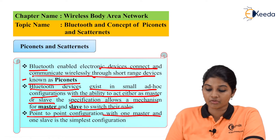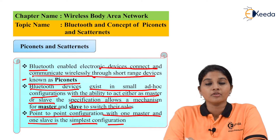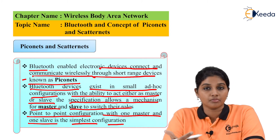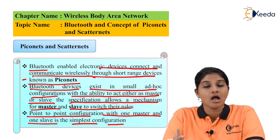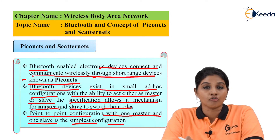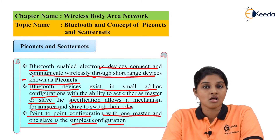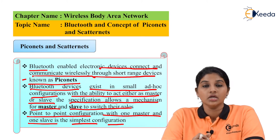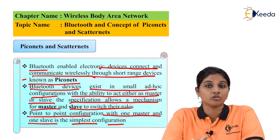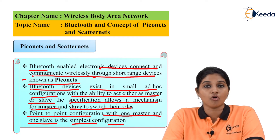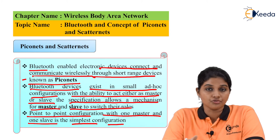The point-to-point configuration with one master and one slave is the simplest configuration. For example, if two mobiles connect using Bluetooth, the device that sends data acts as the master and the device that receives data acts as the slave. This is called a one-to-one configuration. For proper communication between master and slave, there must be synchronization in the system clocks of both devices.